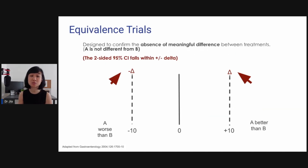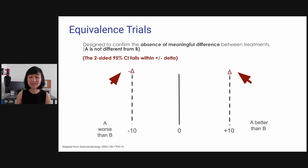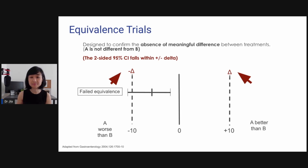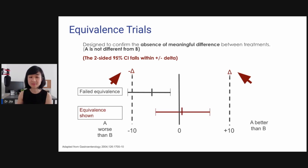The next one is equivalence trials. It is designed to confirm the absence of meaningful difference between two treatments — in other words, A is no different from B. You want to say that the treatment effect lies within the upper and lower borders: positive delta and negative delta. You want to make sure the two-sided 95% confidence interval falls within these boundaries. In the first example, the CI crosses negative delta, so it has failed equivalence. In the next example, both borders of the 95% CI lie within positive and negative 10 delta, so equivalence is shown.